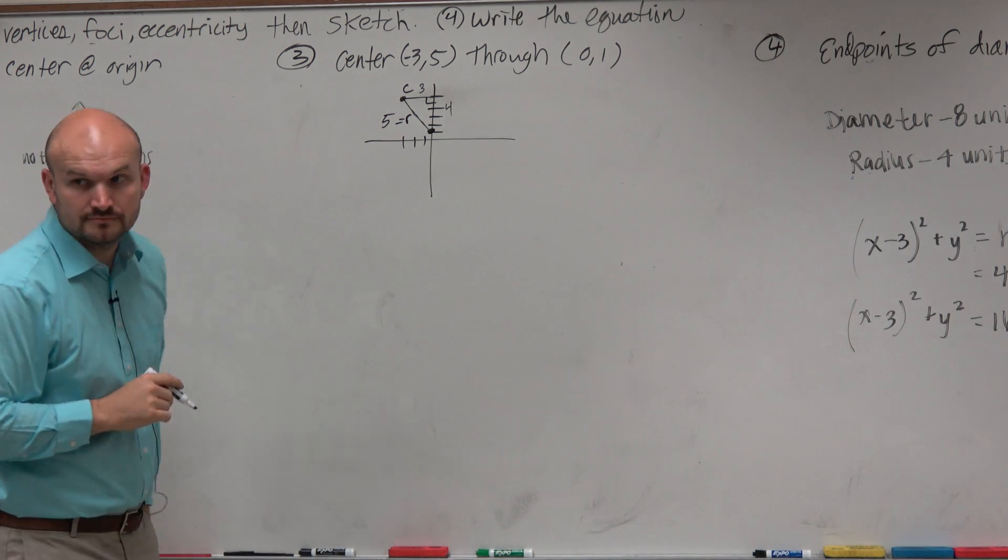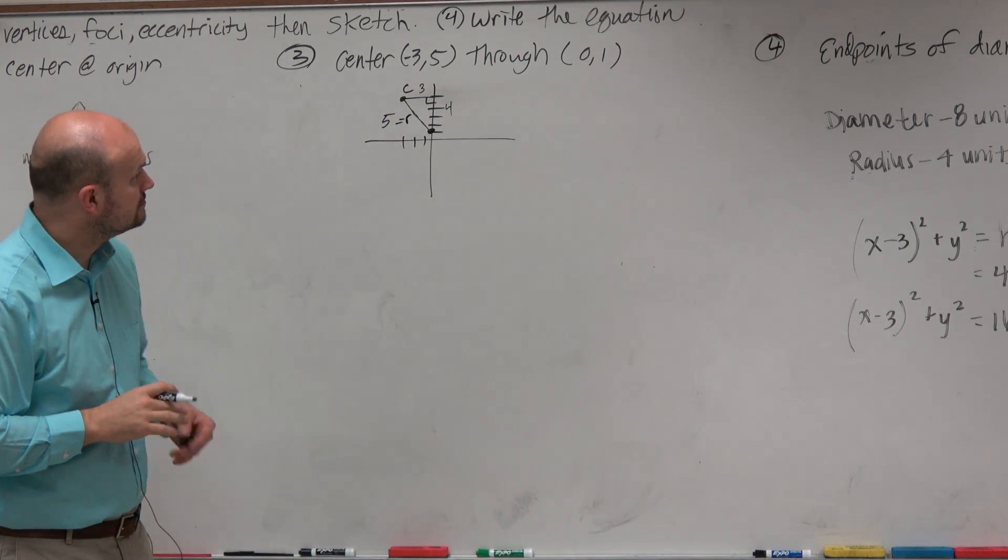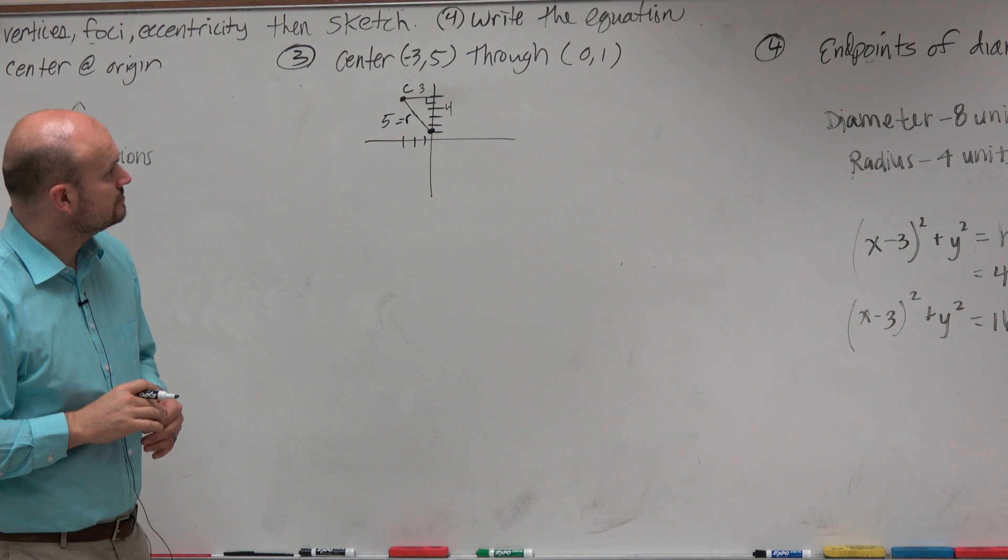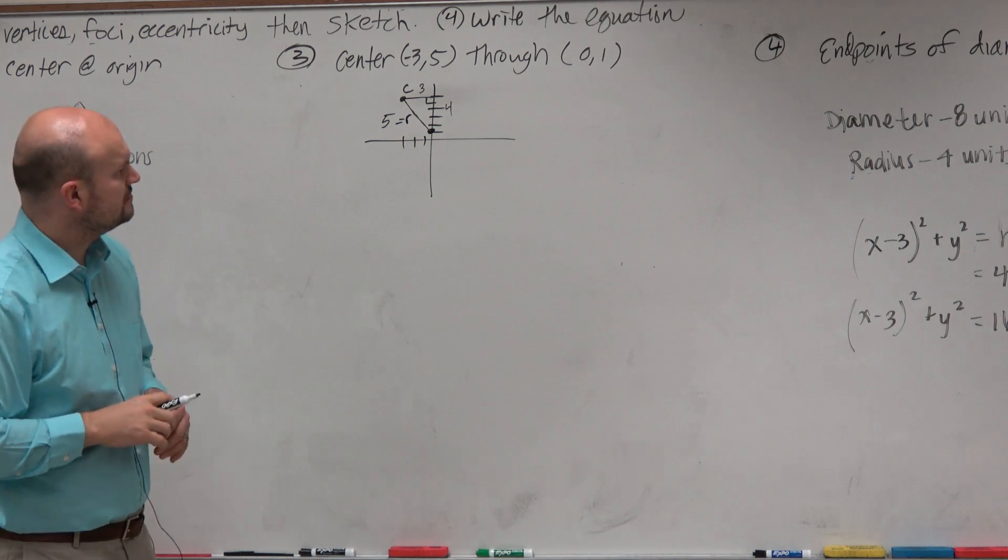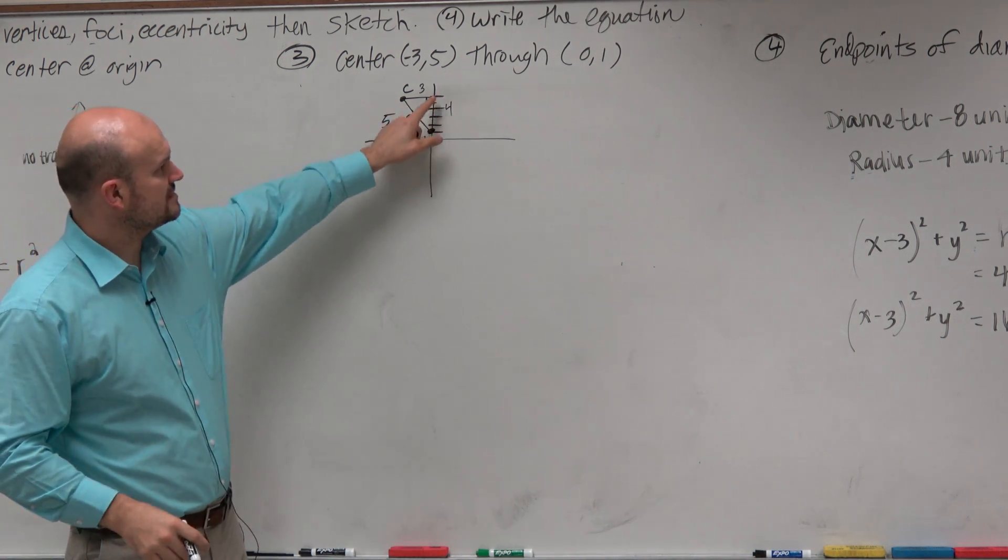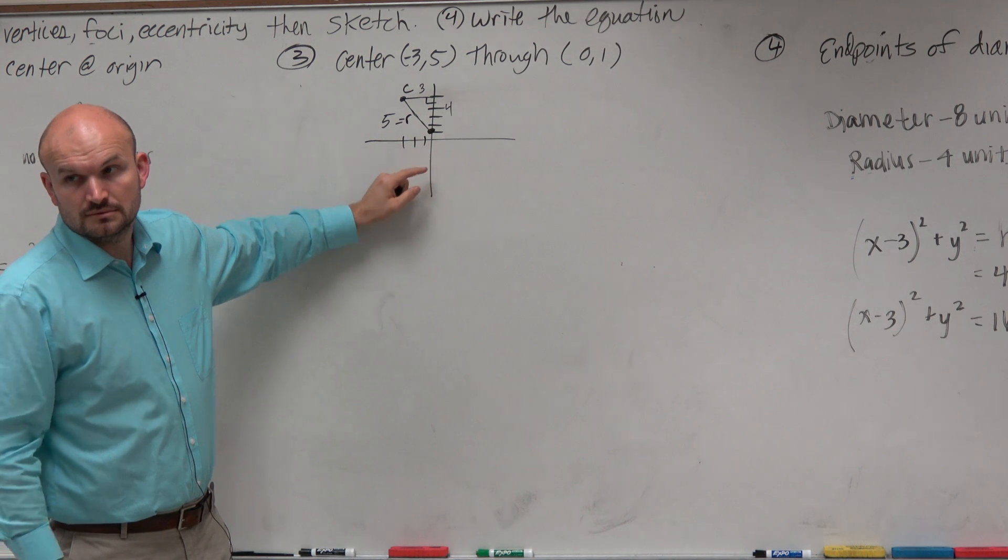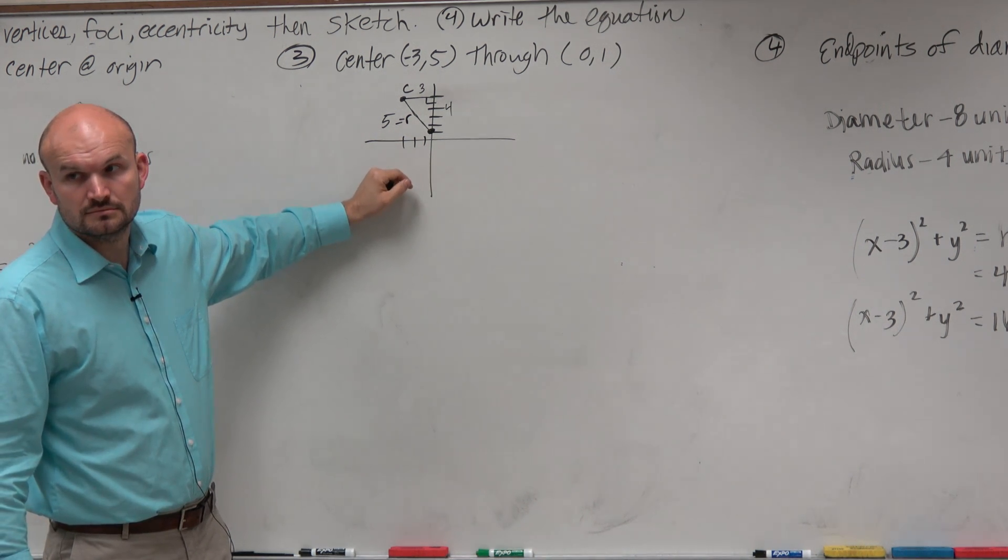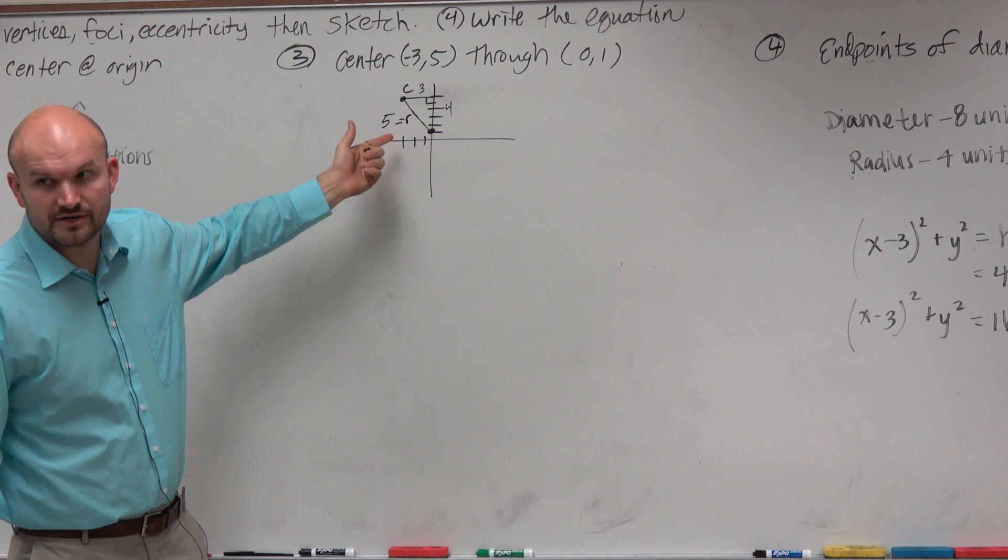So you may try to use 3² plus 4² equals r² to figure it out. I just found the sides, and you can put that into the Pythagorean theorem as well.